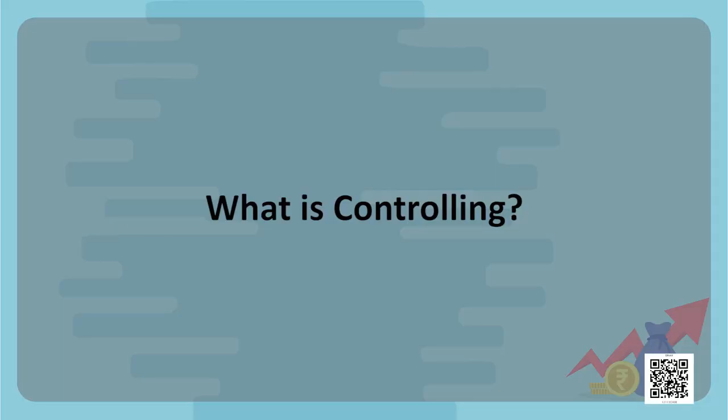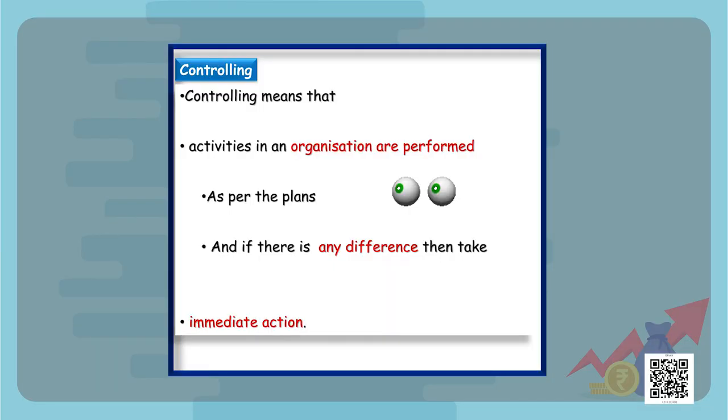Hello students, this is Prateek Bhaseen back with a new chapter of Business Studies class 12. Today we will be discussing chapter 8, that is Controlling. This is the fifth function of management. Controlling means that activities in an organization are performed according to the plans, and if they are not, then we have to find out the deviation and take corrective actions.